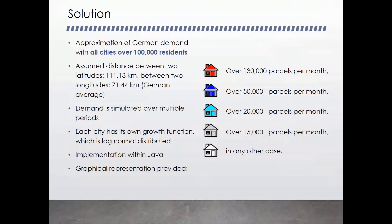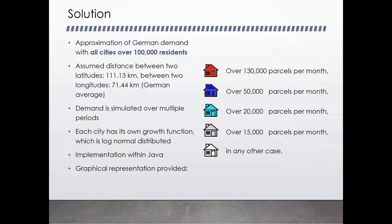For our real life solution, we took the 79 biggest German cities, all over 100,000 residents, and used GPS coordinates to place them on the map. We assumed a distance between latitudes of 111 kilometers and between longitudes of 71 kilometers — the German average. The demand is then simulated over several periods, and each city within each period has its own log-normal distribution.